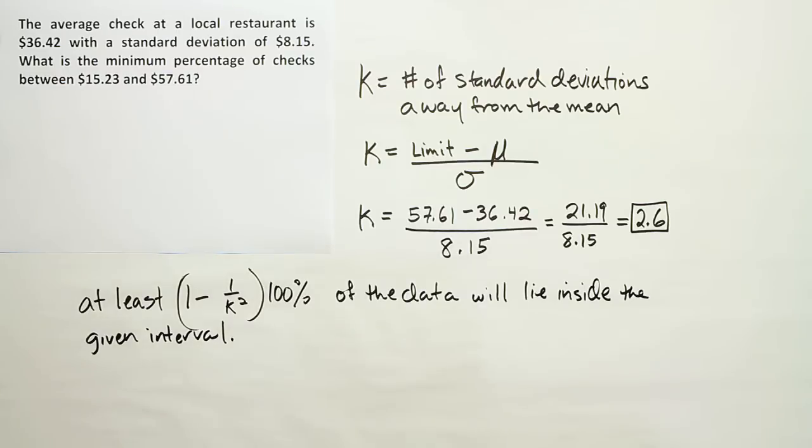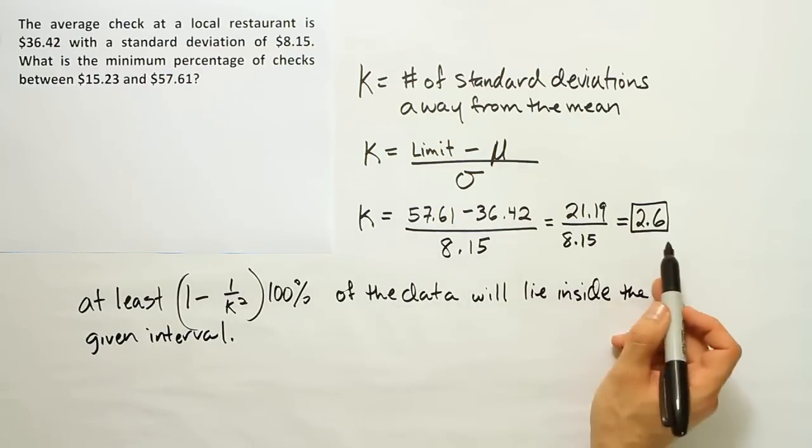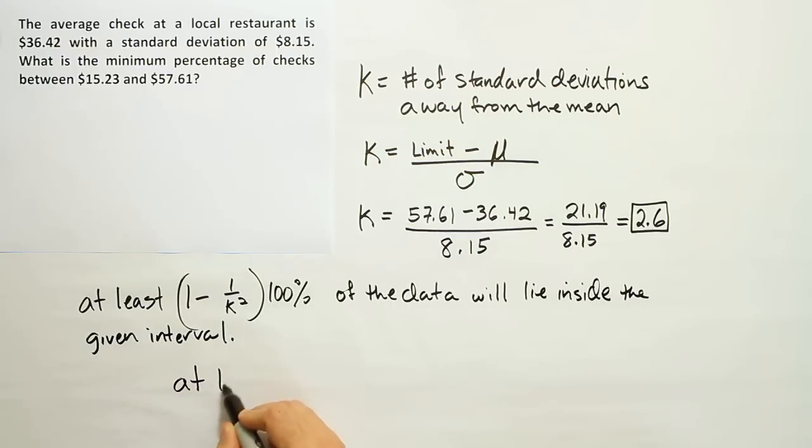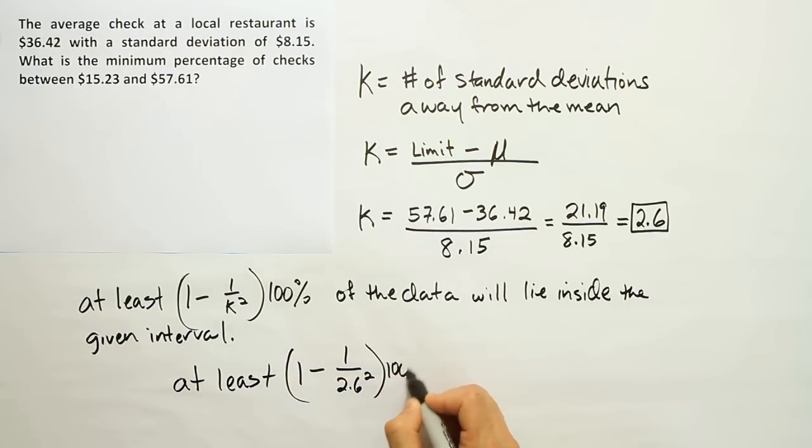So for us, what we should do is to plug in that 2.6 in for K. So that'll be at least 1 minus 1 over 2.6 squared times 100%.